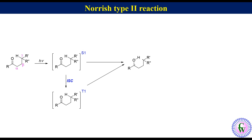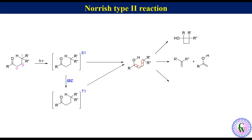There are three possible transformations from the 1,4-diradical. The two radicals can join together to produce a cyclobutanol derivative, or it can undergo beta-gamma C-C bond fission to produce an alkene and an enol. The enol then converts to the more stable tautomeric keto form.